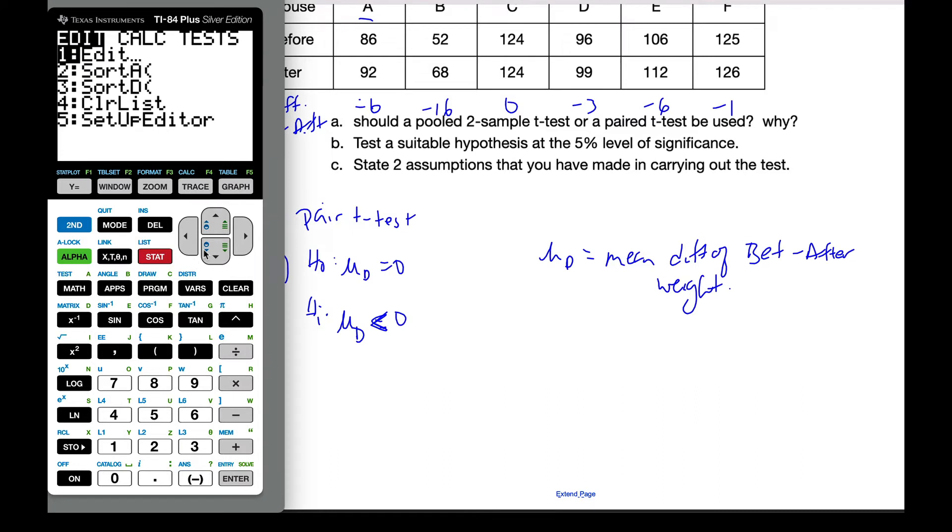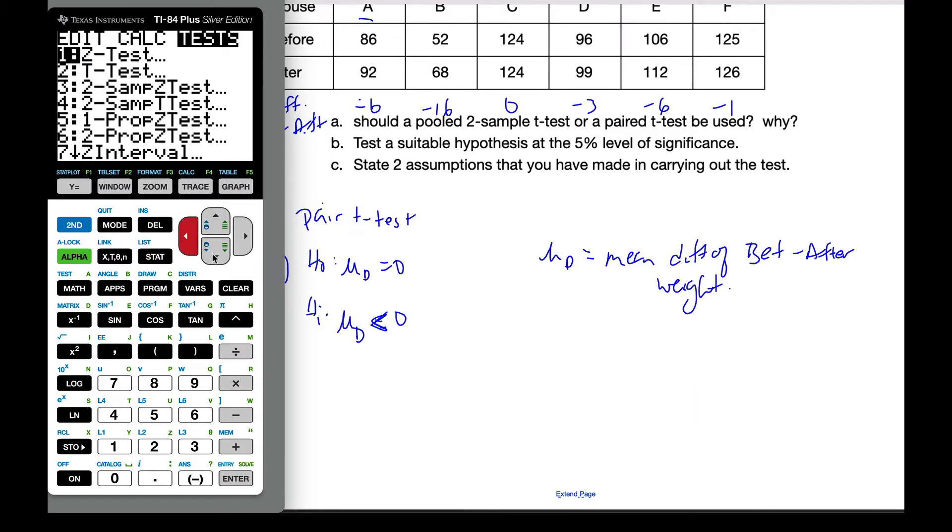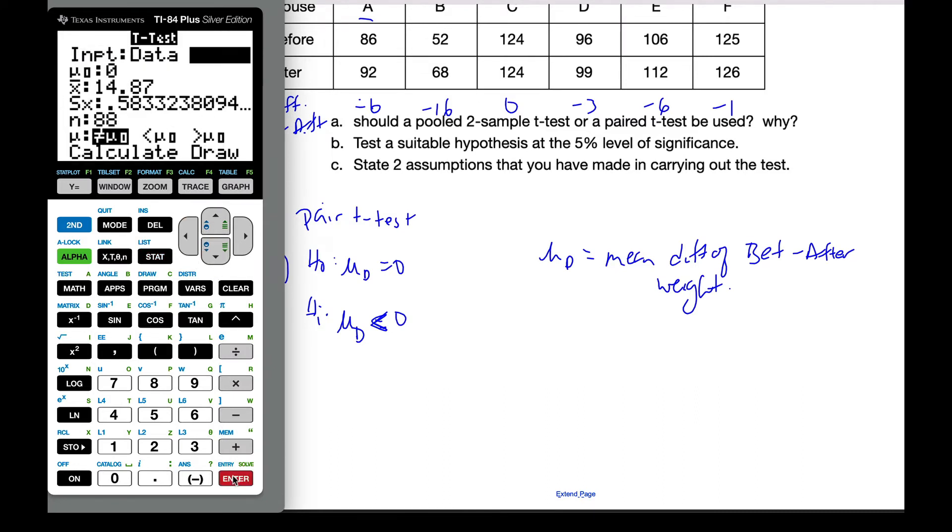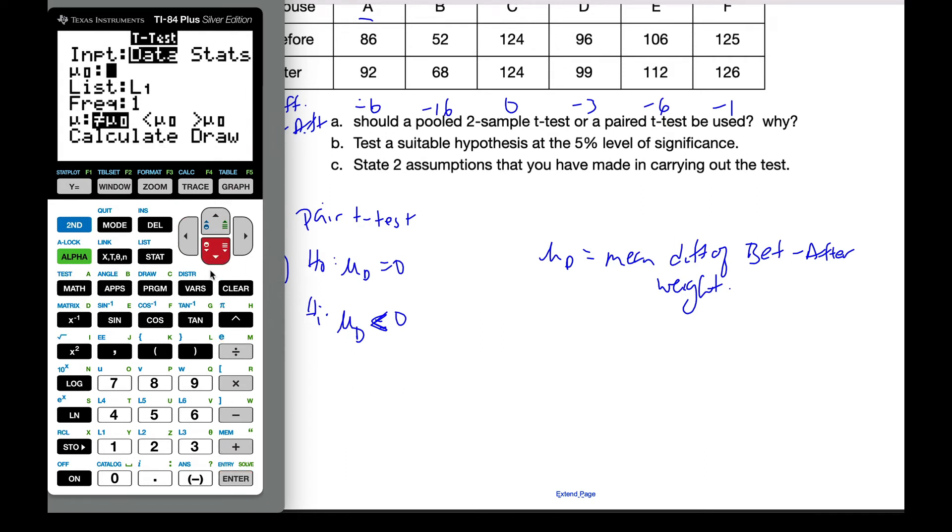And so I'm going to go to my stats, I'm going to do a test. I'm going to do a t-test, a one-sample t-test on the data, and my data is going to be in L3. And I know I want it to be less than. And then I go and I calculate it.